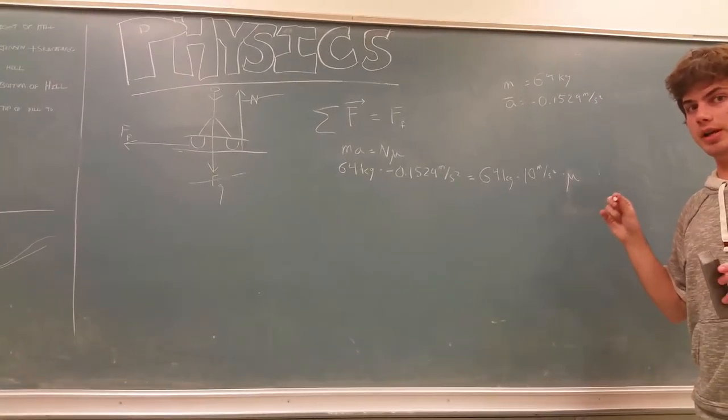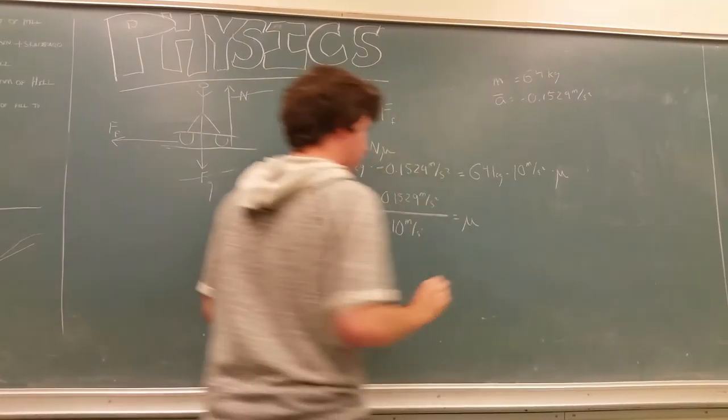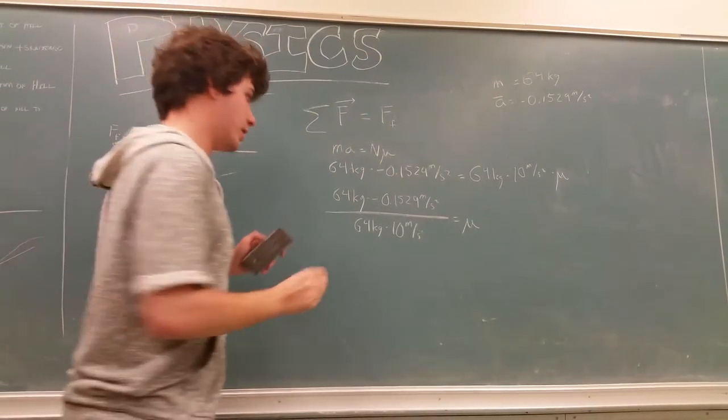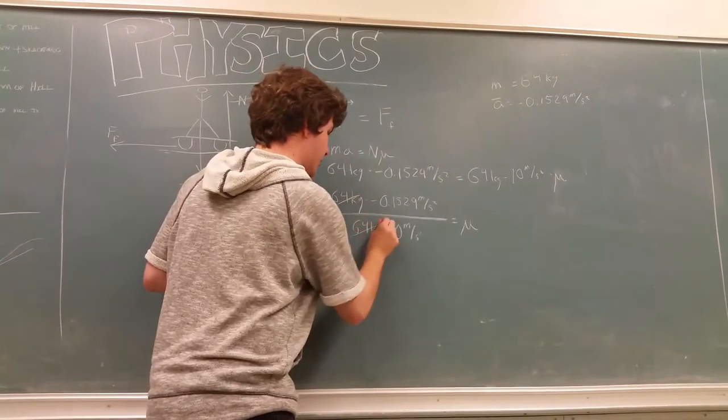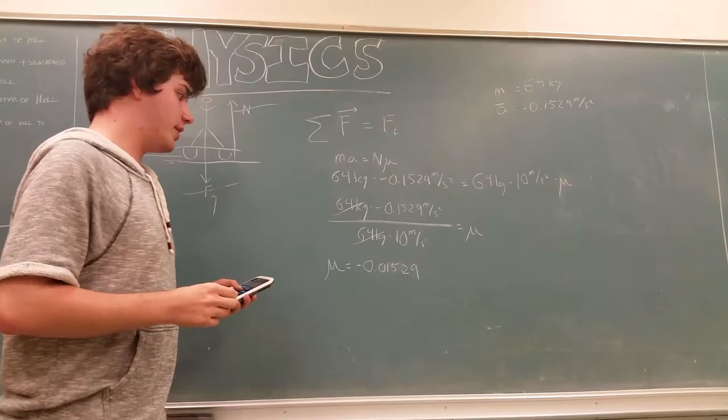So, this is what the equation looks like when we plug in some of our numbers into these variables. And this is what we get when we solve for the coefficient of friction. Masses cancel out. Solving for the coefficient of friction, we get negative 0.01529.